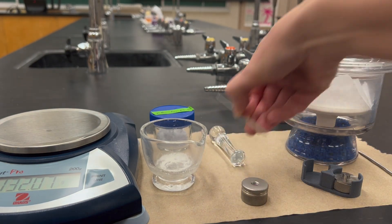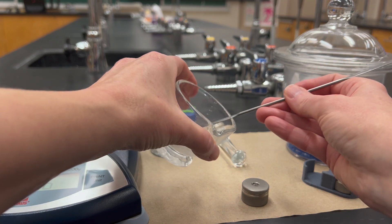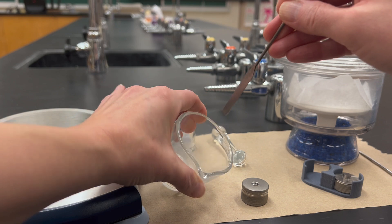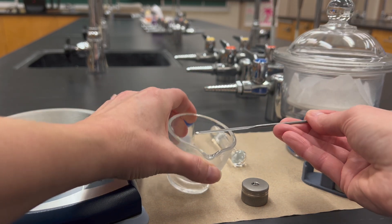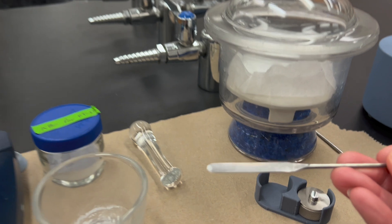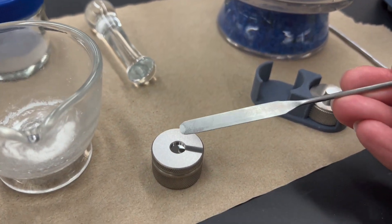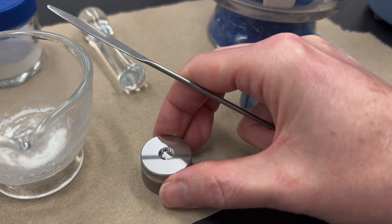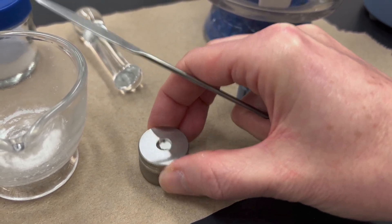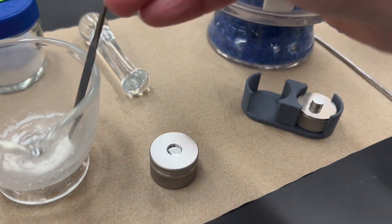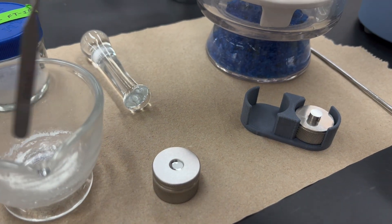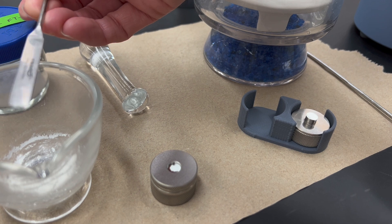Take a spatula tip and put a small amount of the KBR sample mixture into the hole. This is a part where you don't want to add too much. You don't want to add too little either, but if you overload it, you're going to get a really thick opaque KBR pellet, and we don't want that. We want basically the minimum amount of sample that will just cover that hole in a very thin layer.